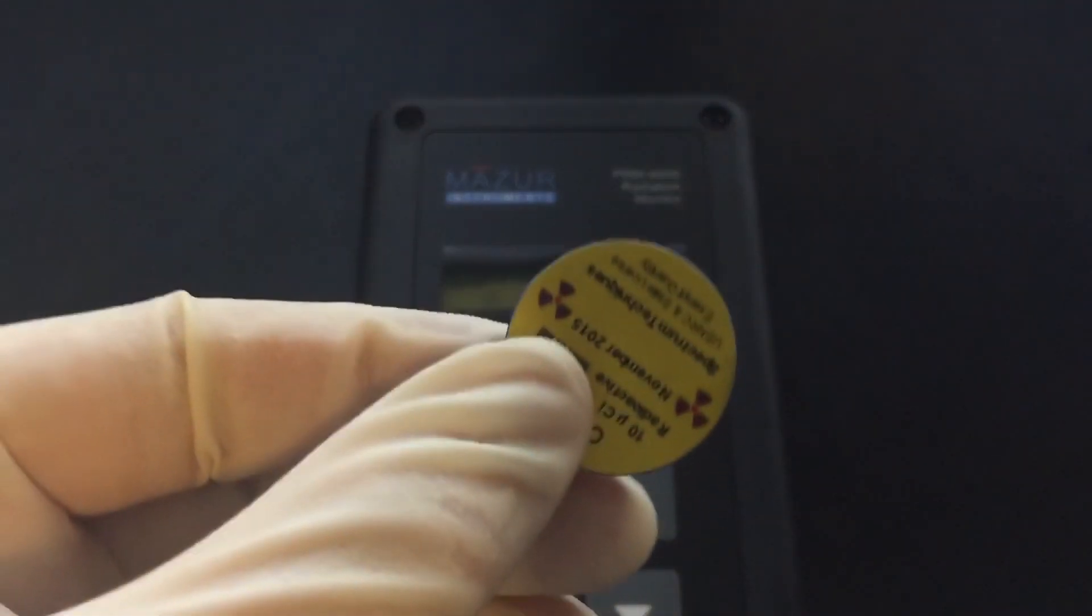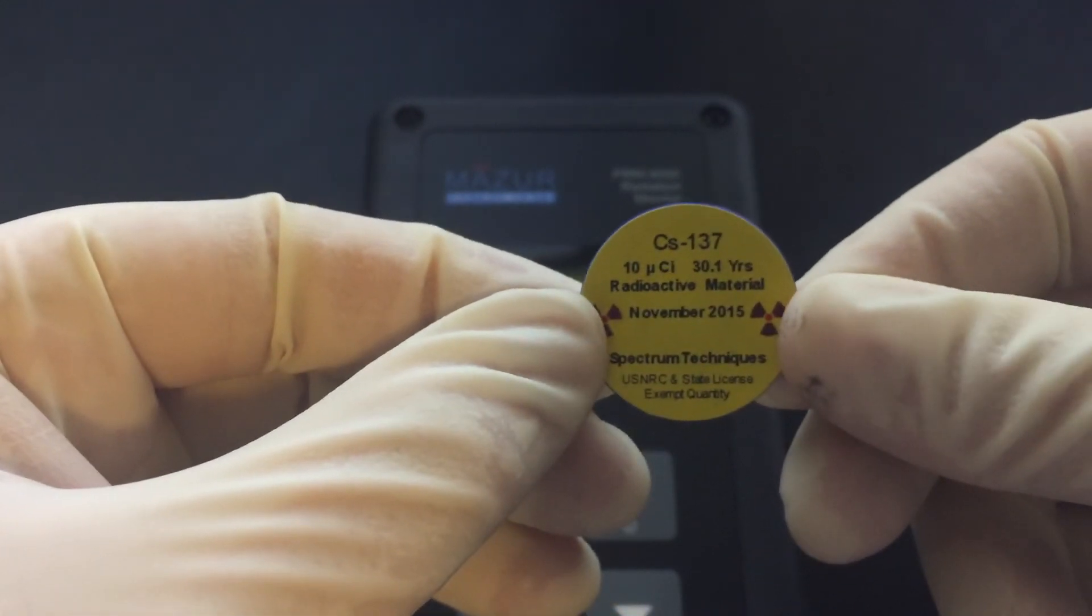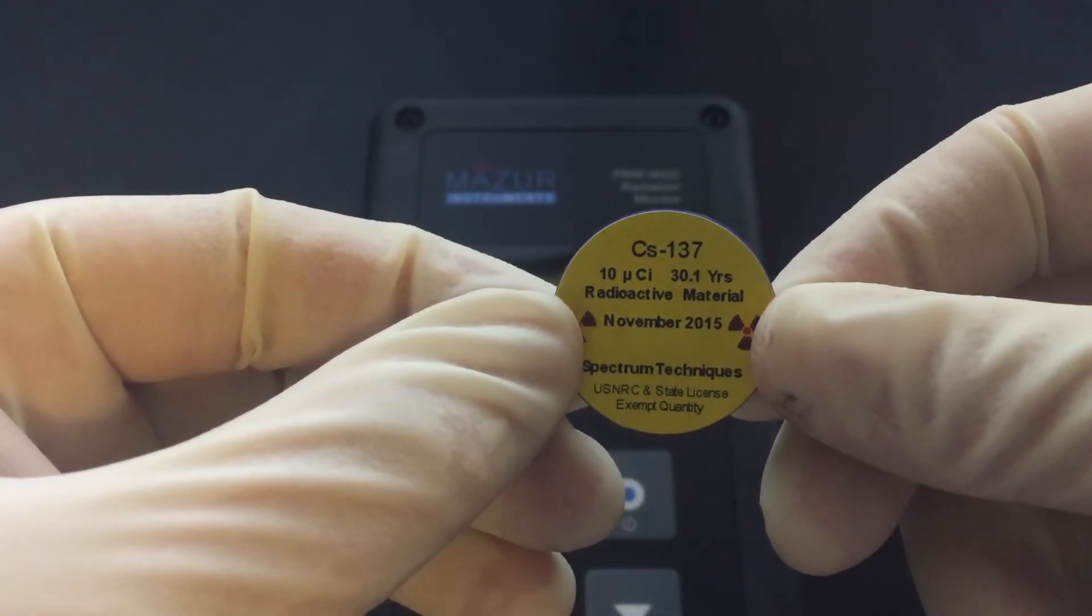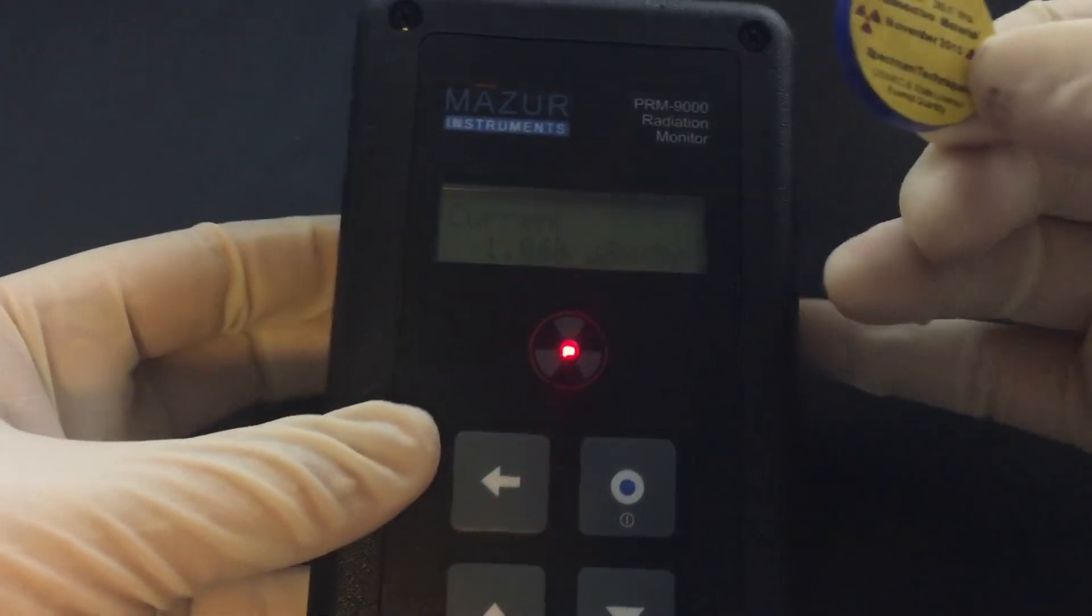haven't done this yet. Let me pull it out of the lead pig. Here is the source—cesium-137, 10 microcurie. You can see this is already starting to